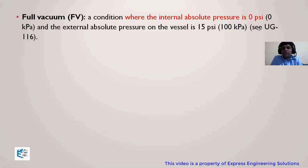When there is nothing inside — absolute pressure of zero inside — and whatever atmospheric pressure is acting from the outside in absolute terms, that condition is called the full vacuum condition as far as ASME Section VIII Division 1 is concerned. So this atmospheric pressure is rounded up to 15 psi for simplicity.